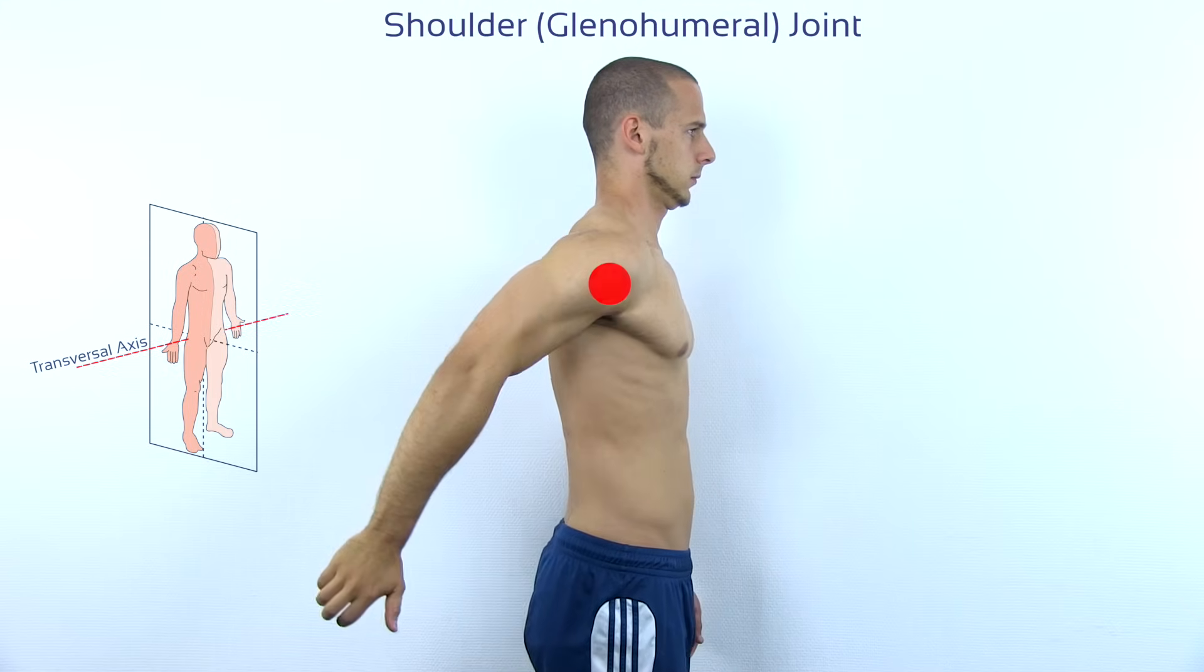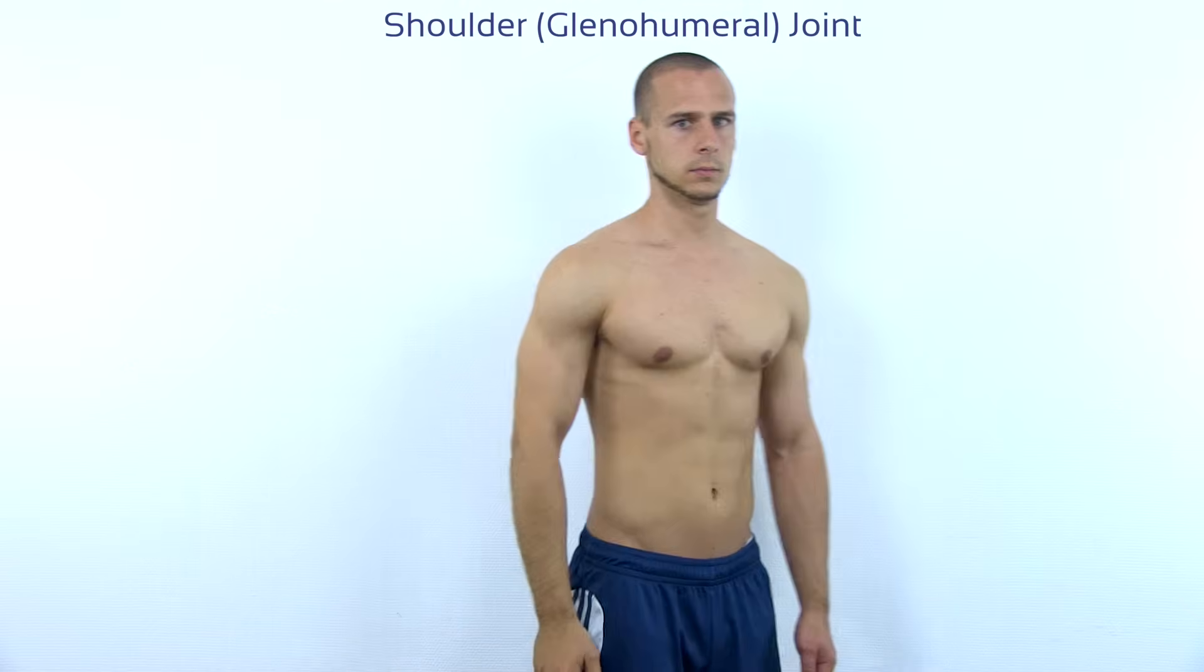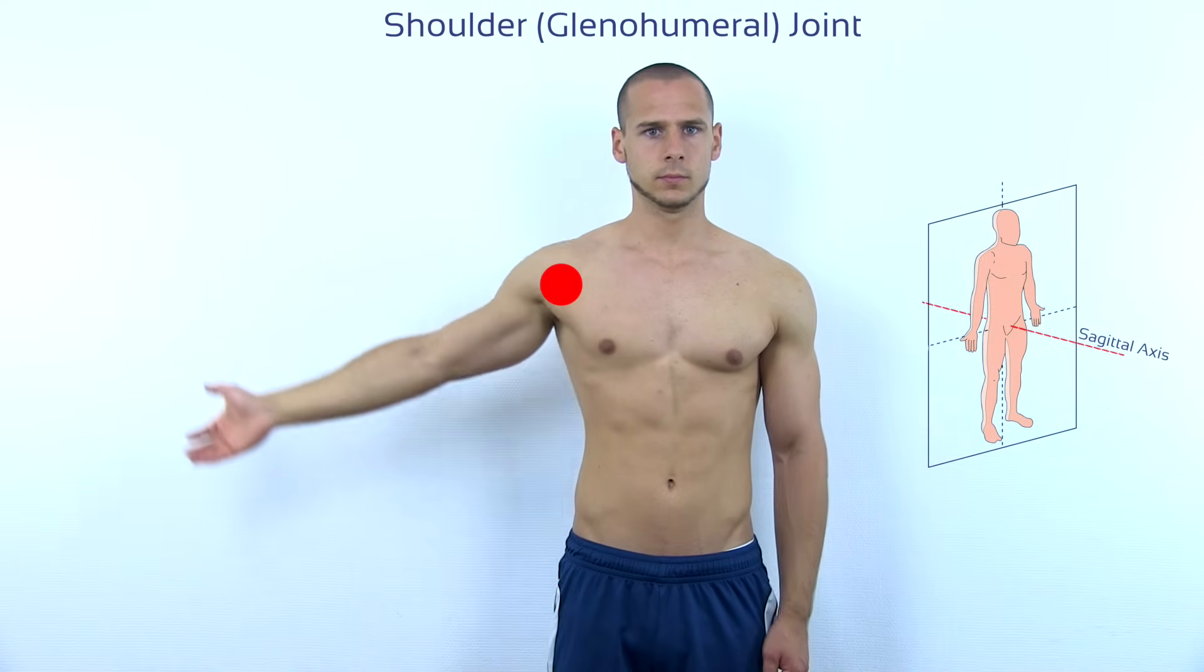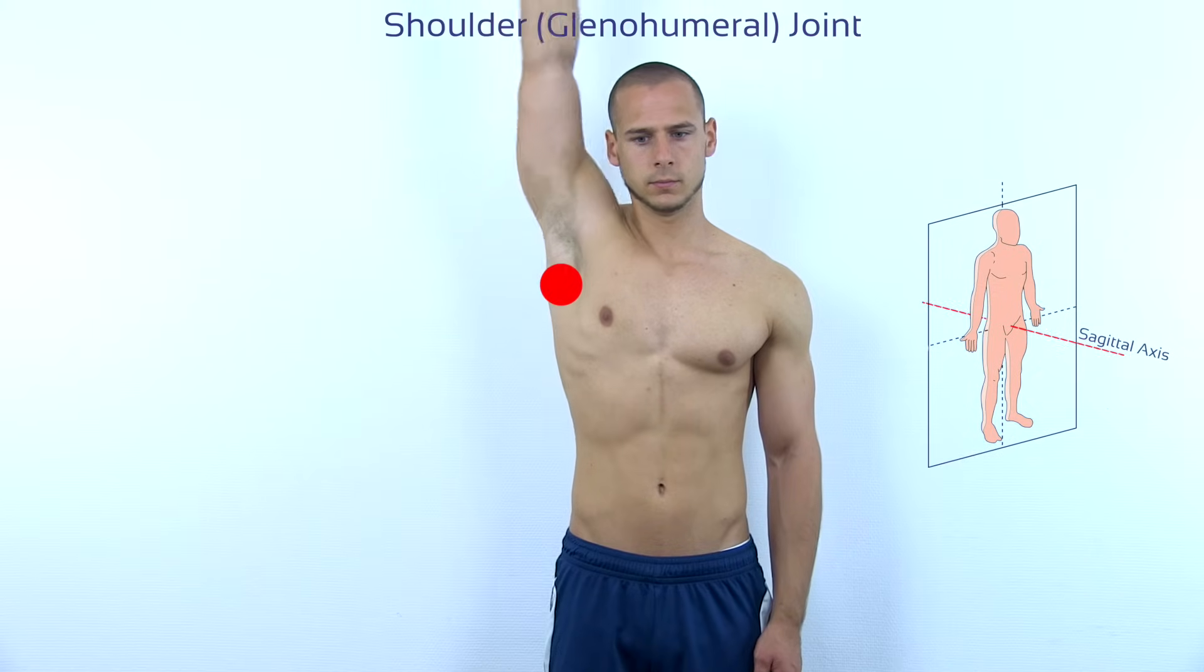If we are moving the shoulder in the frontal plane, we are moving around the sagittal axis. These movements are called abduction and adduction.